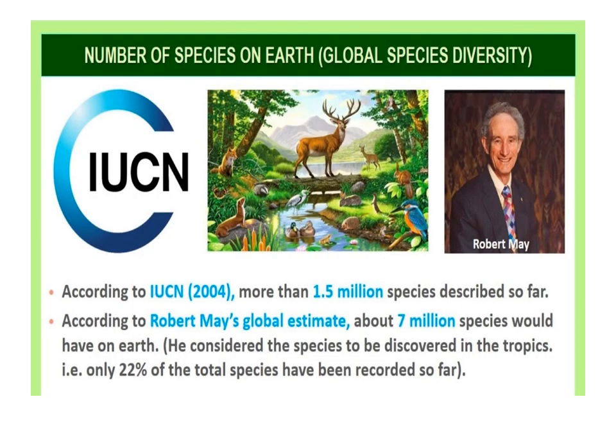According to IUCN 2004, the total number of plant and animal species described so far is slightly more than 1.5 million. But we have no clear idea about the total number of species that exist on Earth. A conservative and scientifically sound estimate made by Robert May puts global species diversity at about 7 million.